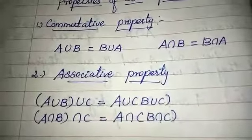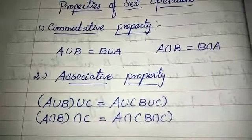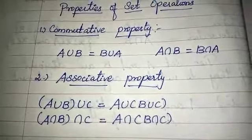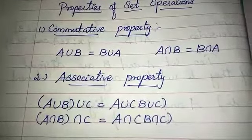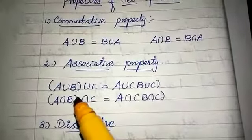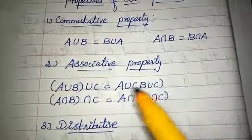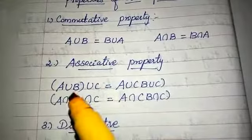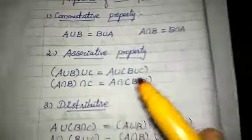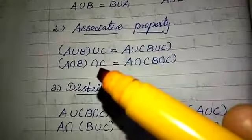Associative property: changing the bracket does not change the result. A union (B union C) equals (A union B) union C — the bracket is converted. This applies to both union and intersection equally. Distributive property also holds for sets.